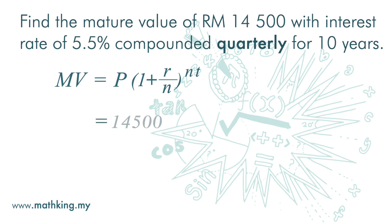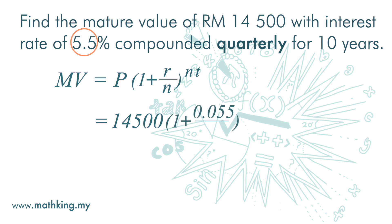Principal is 14,500. Interest is 5.5%, but this is a yearly interest rate. If we compound it quarterly — that is, every 3 months, which is 4 times a year — the interest per quarter is 5.5% divided by 4.